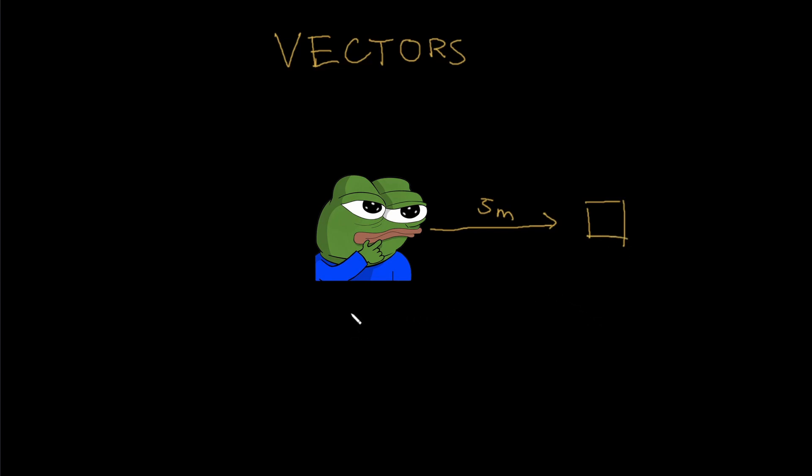The problem with scalars is it's not so accurate. What do I mean by this? Yes, it's correct, but I could be 5 meters away from this box here. I could also be 5 meters away from this box over here. All of them are technically true. I am 5 meters away from the box, but I don't know in which direction I'm away from them.